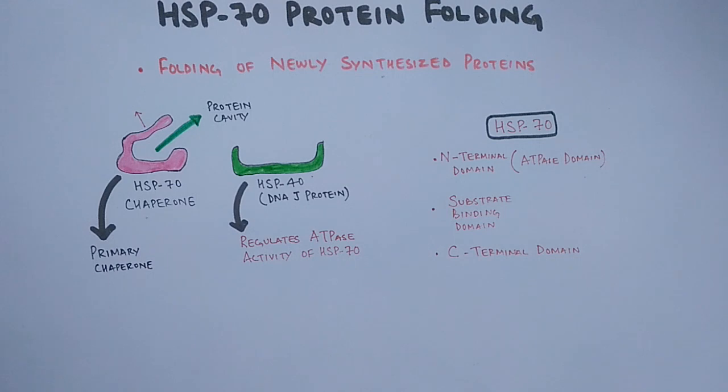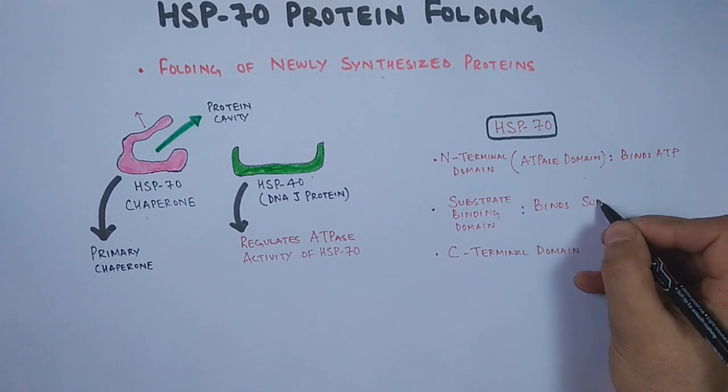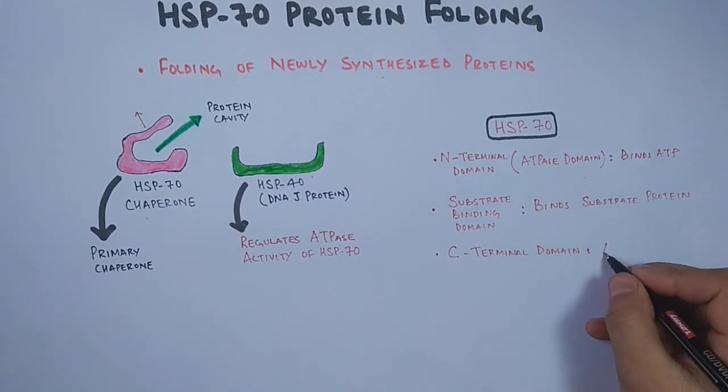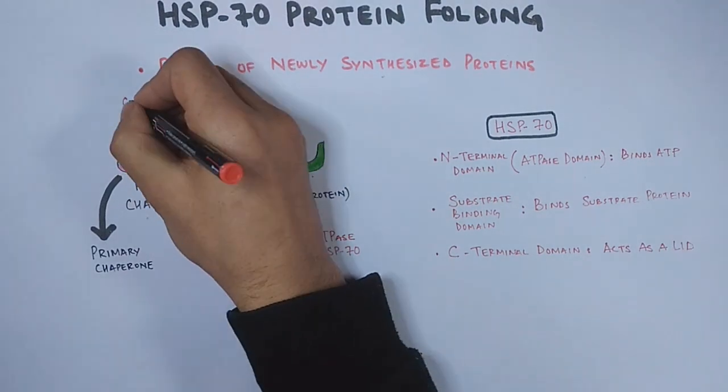The N-terminal domain binds the ATP molecule. The substrate binding domain binds the protein substrate, that's the unfolded protein. And finally, the C-terminal domain acts as a lid for the cavity in which the substrate gets into.